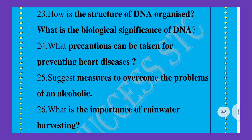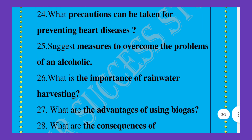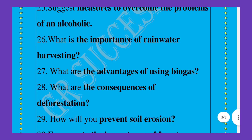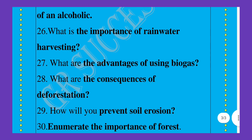Twenty-fourth, what precautions can be taken for preventing odd diseases? Twenty-fifth, suggest measures to overcome the problems of alcohol. Twenty-sixth, what is the importance of rainwater harvesting? What are the advantages of using biogas?